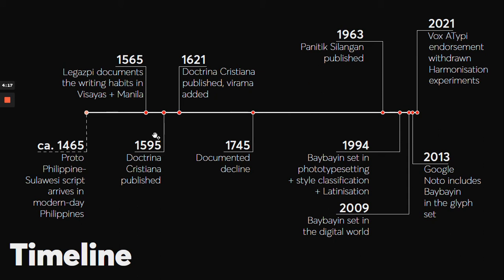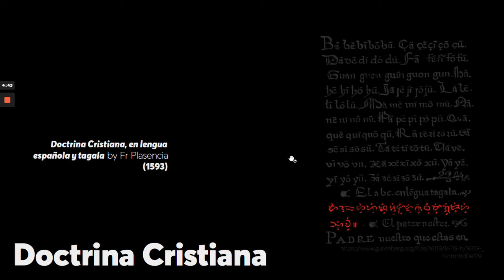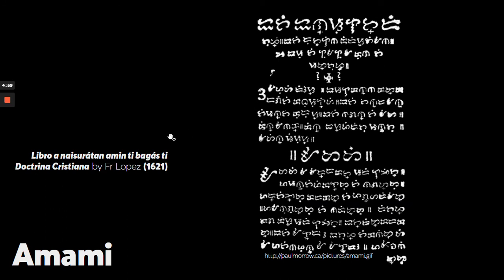We have a timeline from 1465 to today. Starting with the signature or handwriting in Baybayin — this was the time when the script was still widely used. In this specimen of the Doctrina Christiana, the basic characters are highlighted in red. We also have here the Ra, and the Cruz Kudlit, where the cursor is.